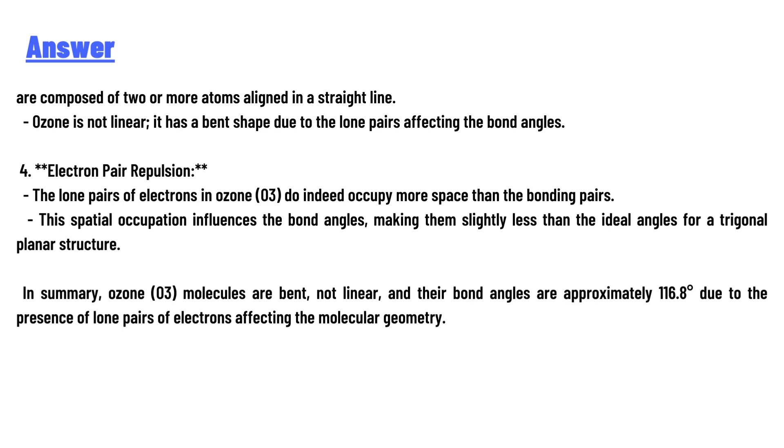summary, ozone O3 molecules are bent, not linear, and their bond angles are approximately 116.8° due to the presence of lone pairs of electrons affecting the molecular geometry.